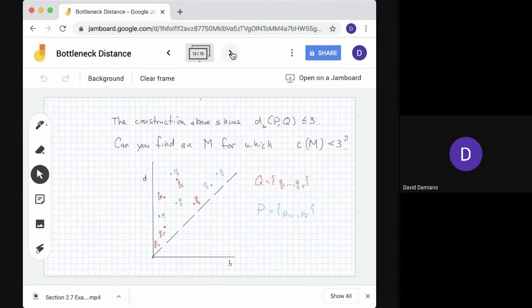Okay. So the construction above shows that d_B PQ is less than or equal to 3 because we found a partial match with cost 3. So the question is, for these points, can you find a partial match for which the cost is less than 3? In that case, we get a lower upper bound on the bottleneck distance.